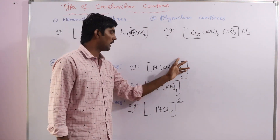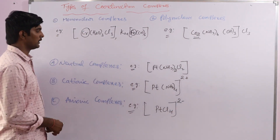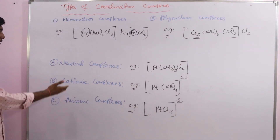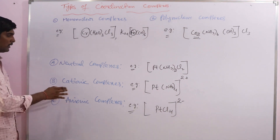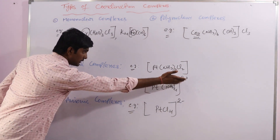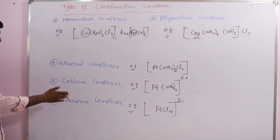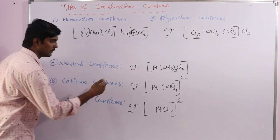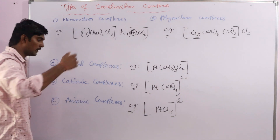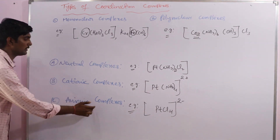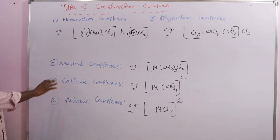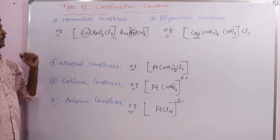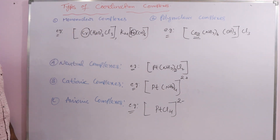To summarize: if there is no charge on the coordination sphere, it is a neutral complex. If there is a positive charge on the coordination sphere, it is a cationic complex. If there is a negative charge on the coordination sphere, it is an anionic complex. This is the general classification of coordination complexes based on charge.